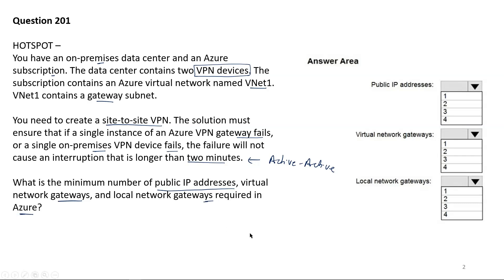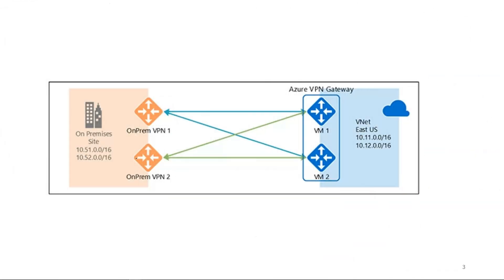Let's understand this scenario by the diagram. In simple words, we are going to obtain this scenario where we are going to use our VPN devices on-premises, and we are going to use an Azure VPN gateway on Azure with two instances. We will see that if one VPN device fails, another will still be taking care of it, so it will be active-active VPN connectivity from both ends.